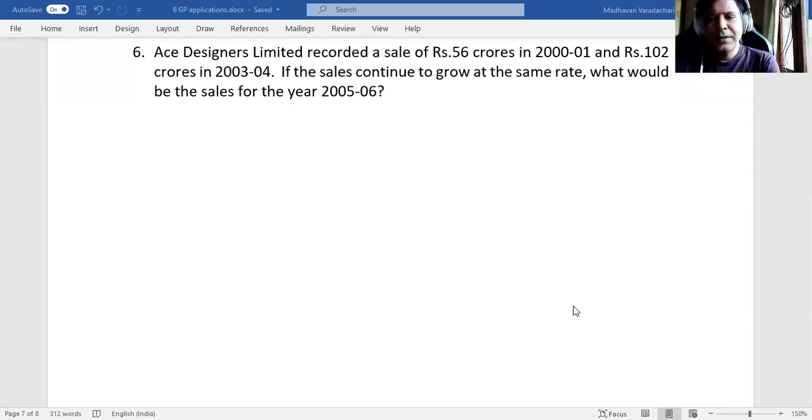Hello everyone, this is in continuation to various application-related problems in geometric progression. The next question is question number six: Ace Designers Limited recorded a sale of rupees 56 crores in financial year 2000-2001 and rupees 102 crores in financial year 2003-2004. If the sales continue to grow at the same rate, what would be the sales for the year 2005-2006?